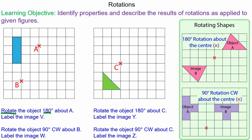We're going to rotate the object 180 degrees about A. So first thing we'll do is mark on a 180 degree rotation and we're going to label our vertices.